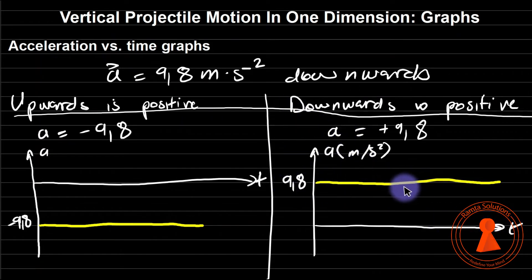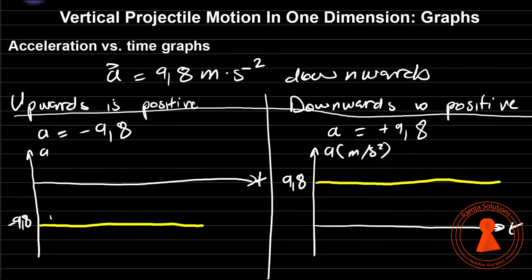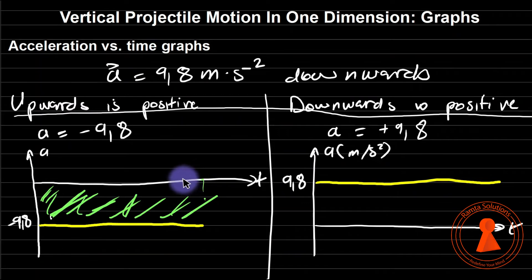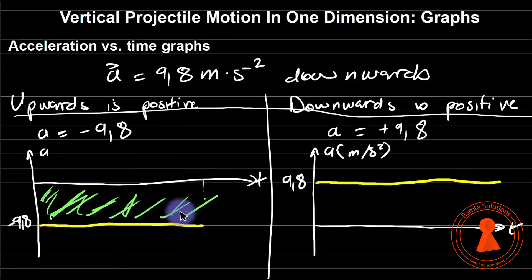Your acceleration will always be constant. Now, the area under acceleration versus time will give you the velocity of the object.